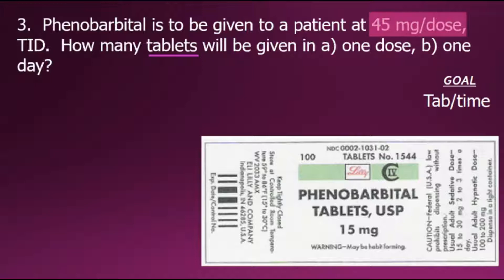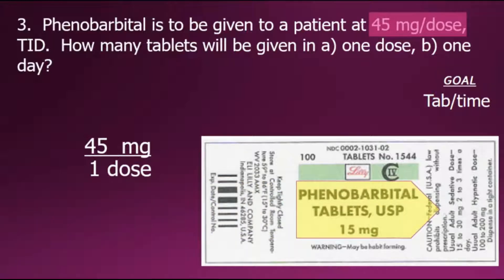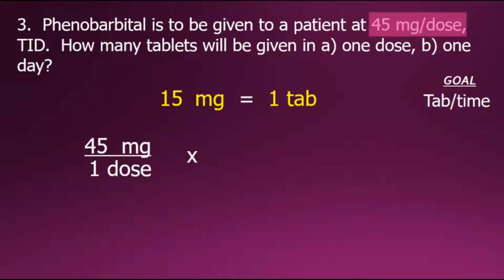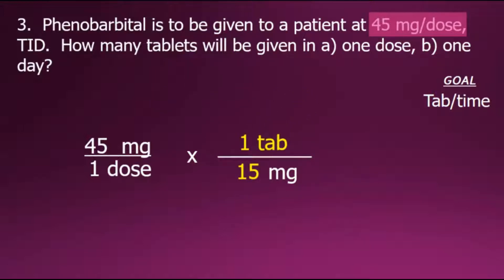The doctor's order is for 45 milligrams per dose, so we'll begin with that shown as a fraction: 45 milligrams per one dose. The medication on hand shows that 15 milligrams is equal to one tablet. Using this, we set up a conversion fraction — 15 milligrams in the denominator and one tablet in the numerator — giving us a conversion fraction with a value of one.